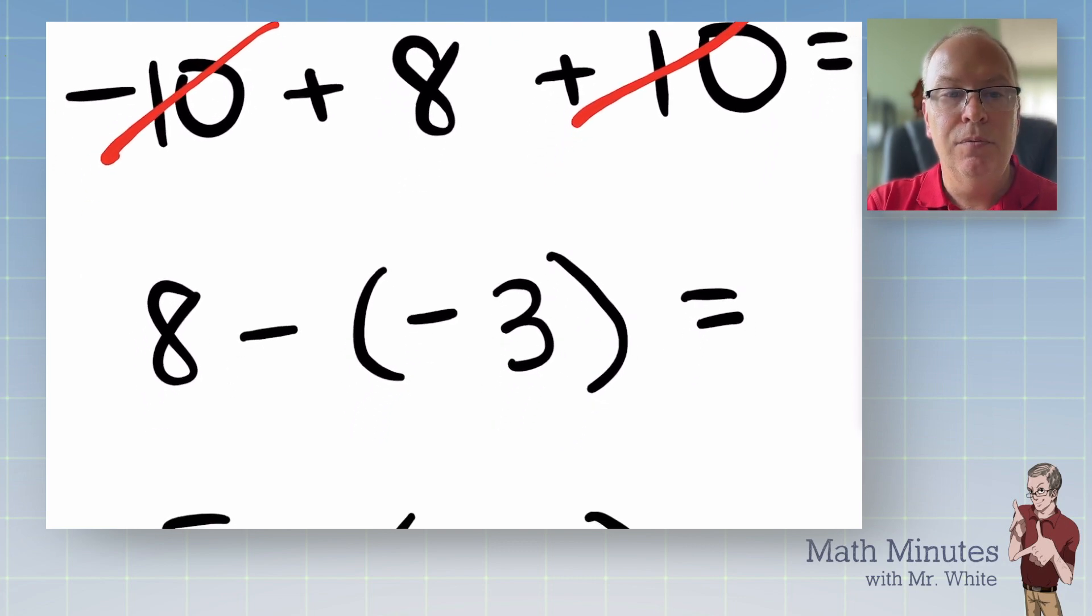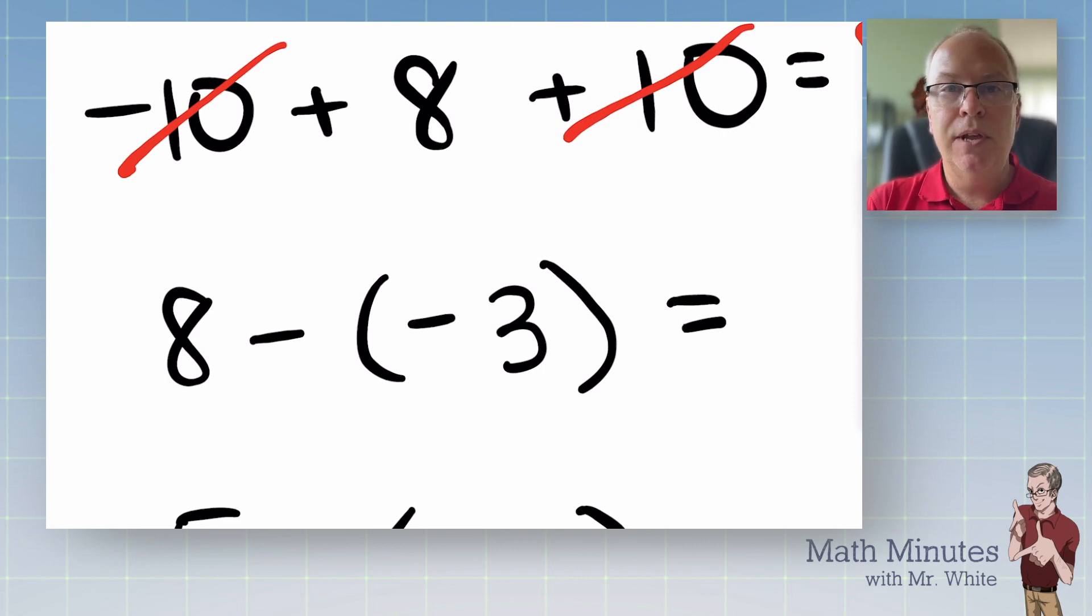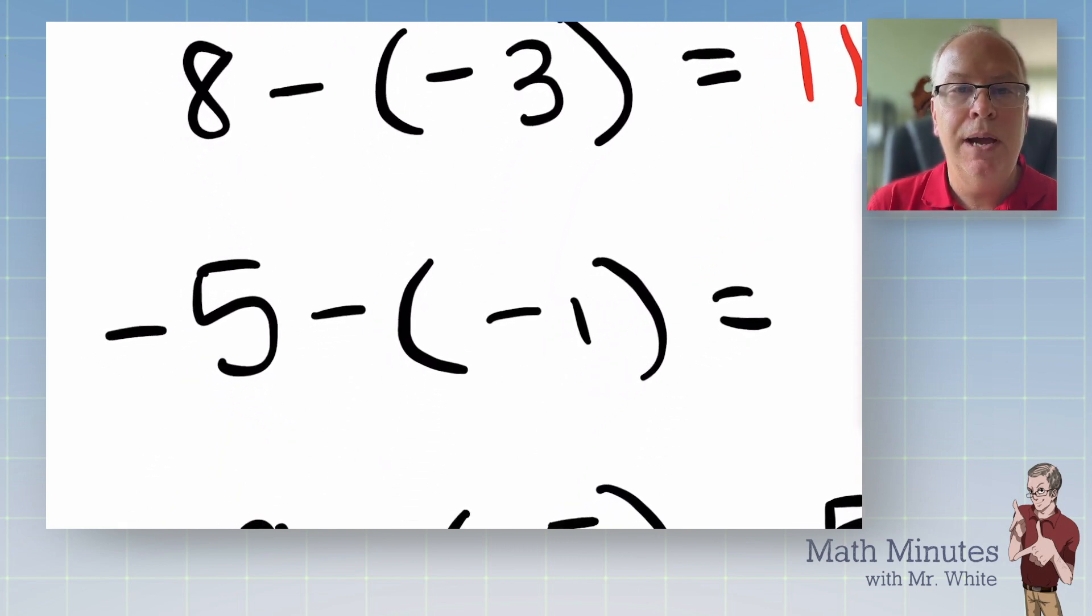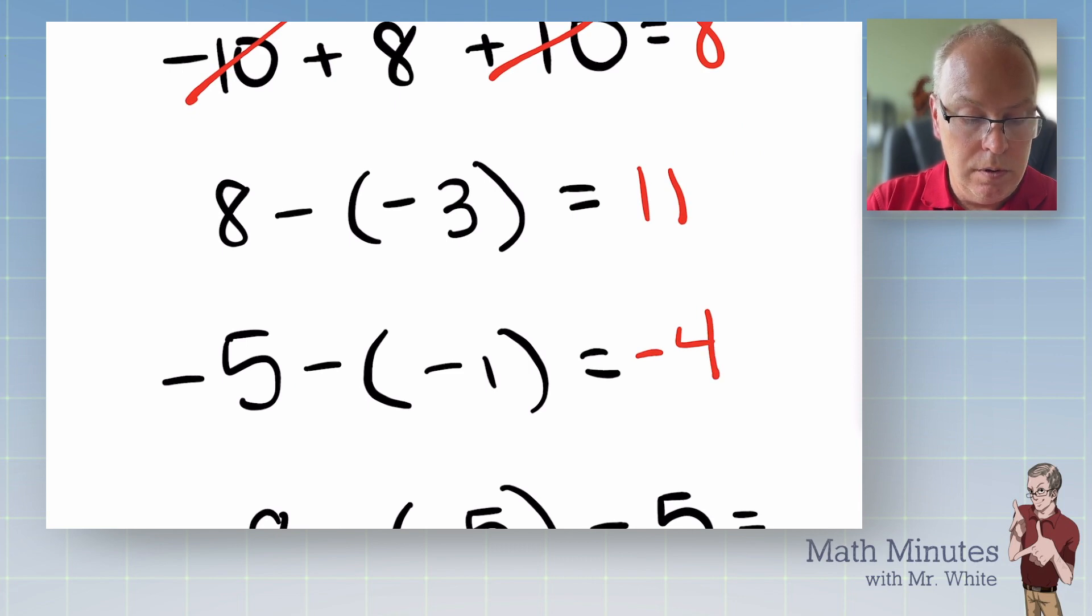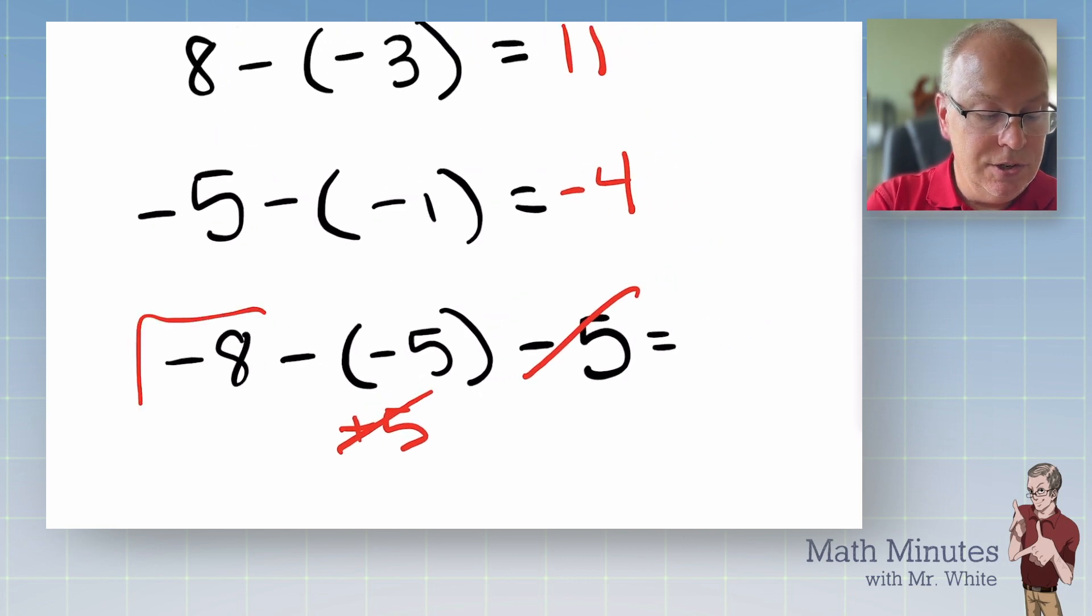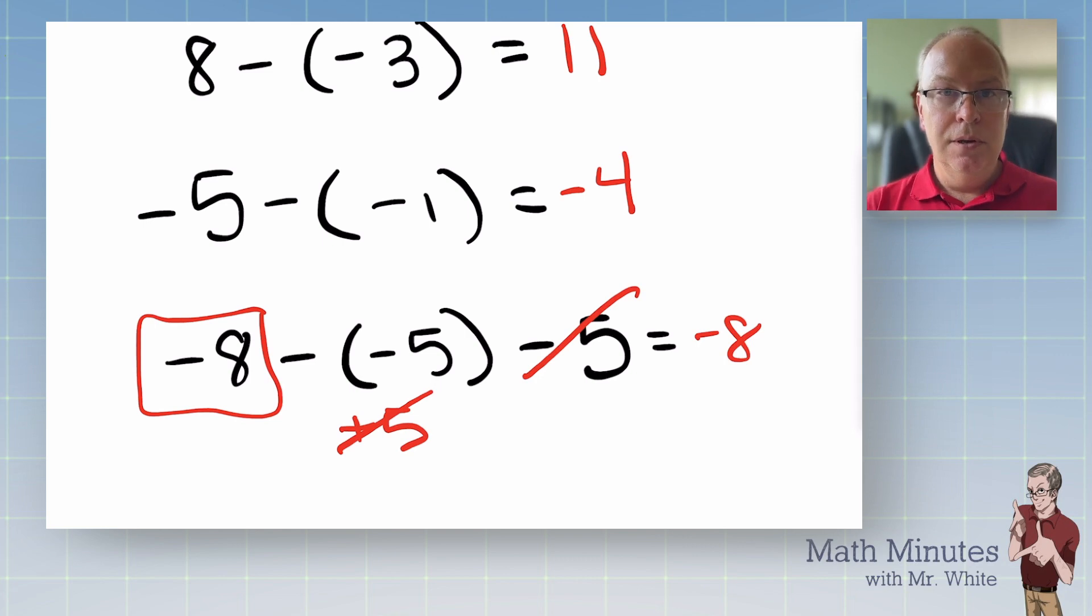All right. How about eight minus negative three? Eight subtract negative three. Eight minus negative three. That's the same thing as eight plus three. That's eleven. And here we have another one. What is negative five minus minus one? That's negative five plus one. Who wins by how much? The negatives by four. And finally, what about this one right here? Negative eight minus negative five minus five. Don't just plow left or right. Look for something special here. This is really just positive five, right? Because of the double negative. So then that positive five cancels that negative five. And the answer is just this guy right here. Negative eight is the answer.